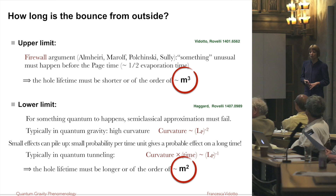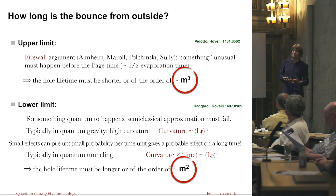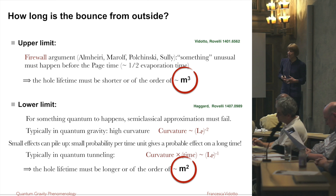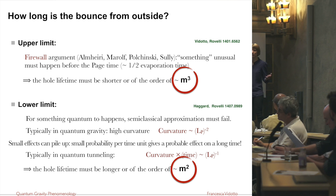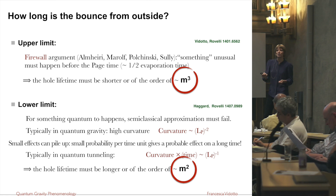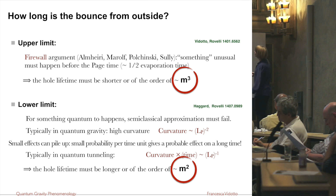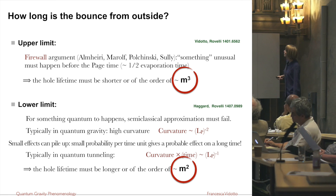This is a paradox, and as quantum gravity researchers we think that quantum gravity should enter the game before we find the paradox — so something should happen before we reach the Page time. The Page time is of the order of m³, which is the lifetime if the process were dominated by Hawking evaporation. In this case the maximum time is just half of m³, so still on the order of m³.